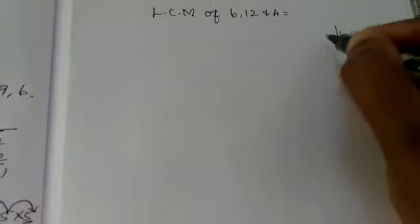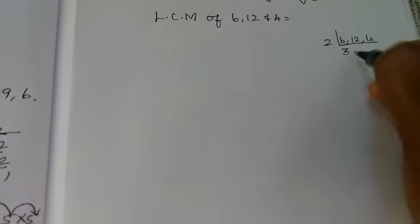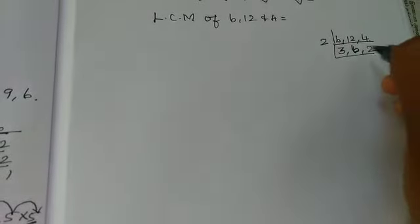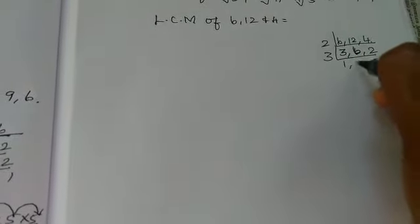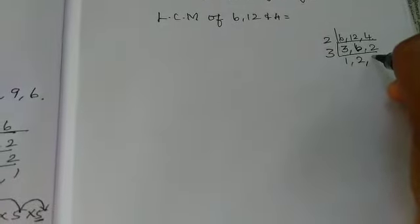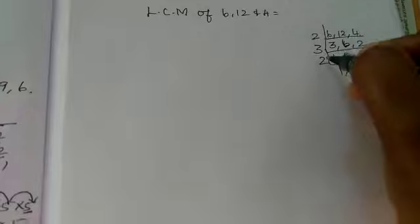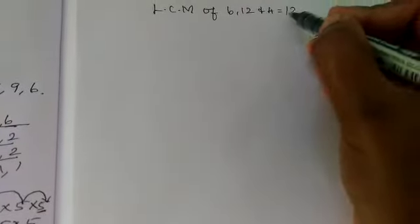Again, we can apply 3 table. 1, 3 is 3. 3, 6. 2 as it is. Now, 2. So, what is LCM? 12 is the LCM.